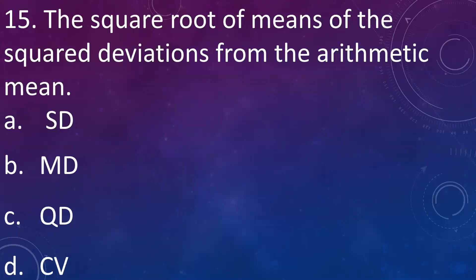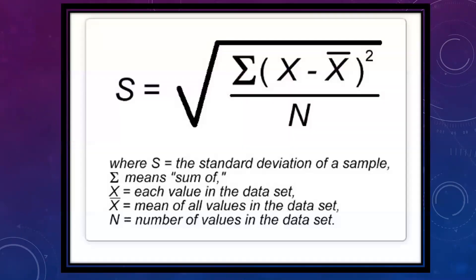The square root of the means of the squared deviations from the arithmetic mean is: A: standard deviation, B: mean deviation, C: quartile deviation, D: coefficient of variance. Answer is A: standard deviation. The formula of standard deviation is the square root of summation of (X minus X-bar) squared divided by N, where X is each value of the data set, X-bar is the mean of all values, and N is the number of values in the data set.